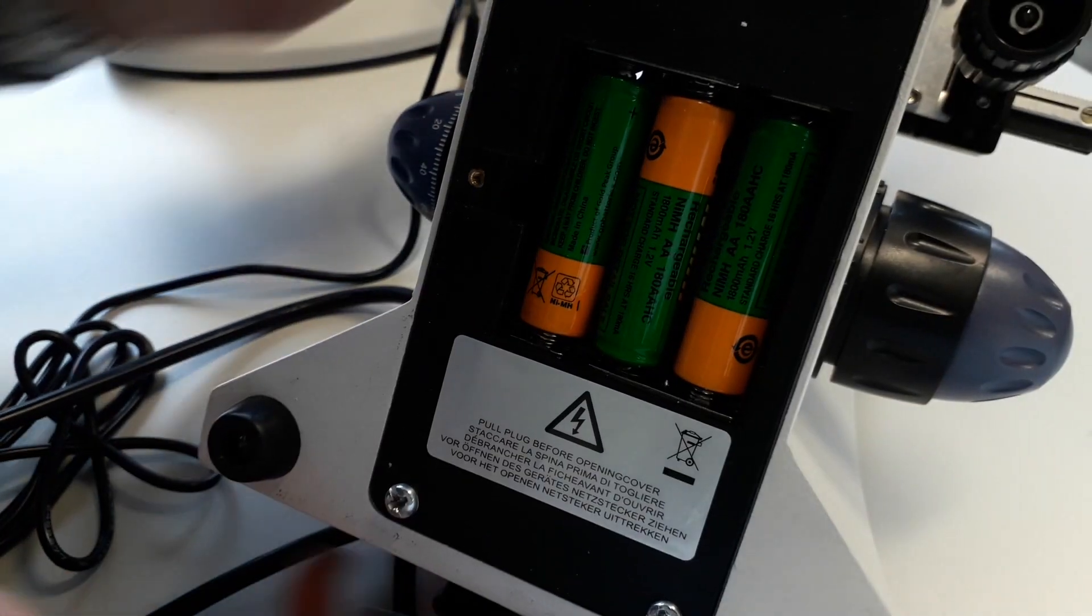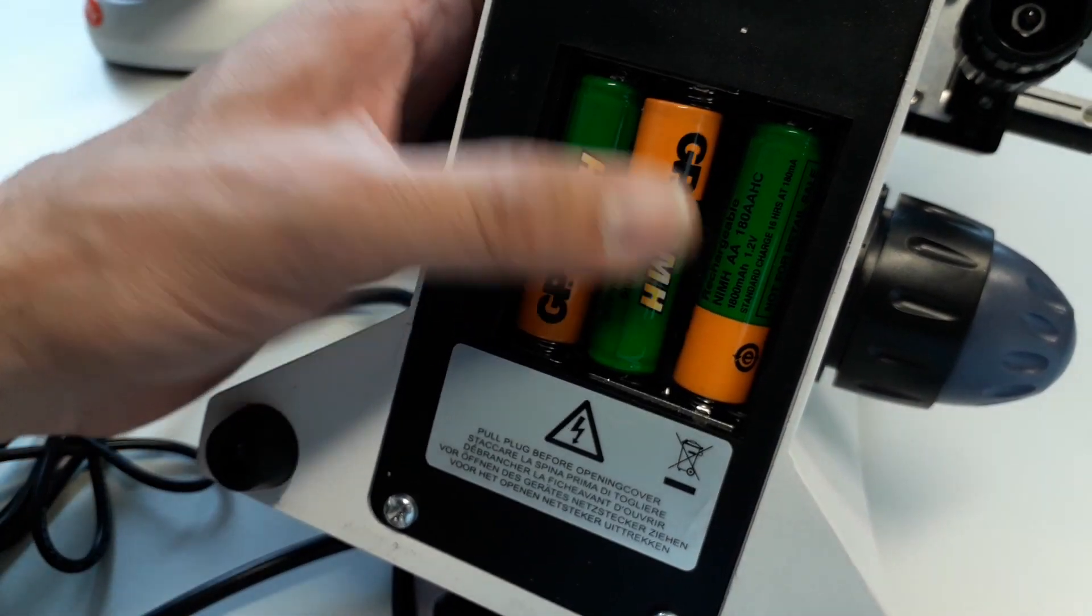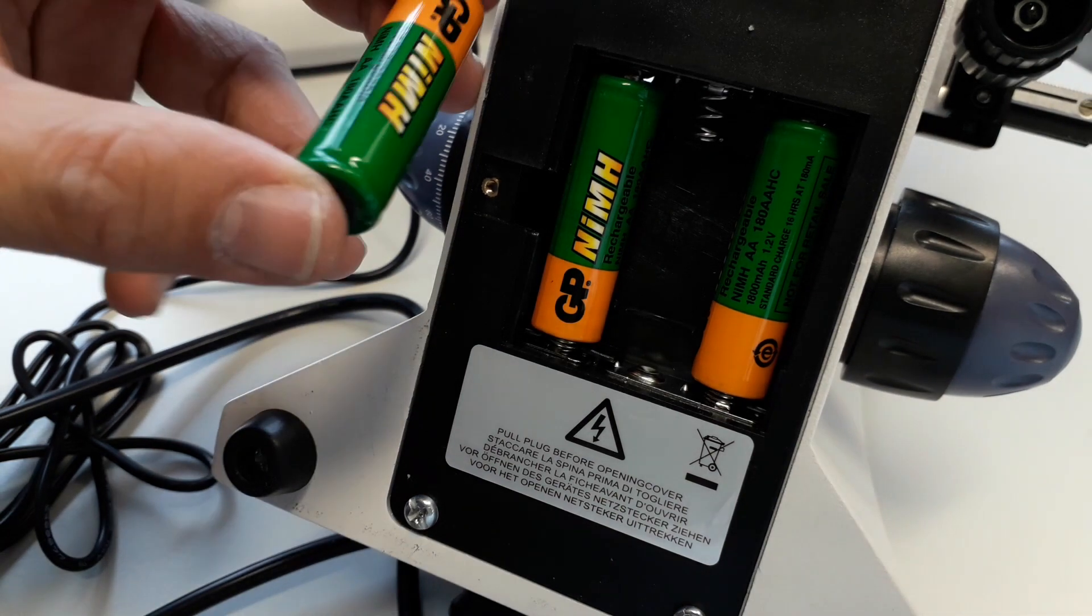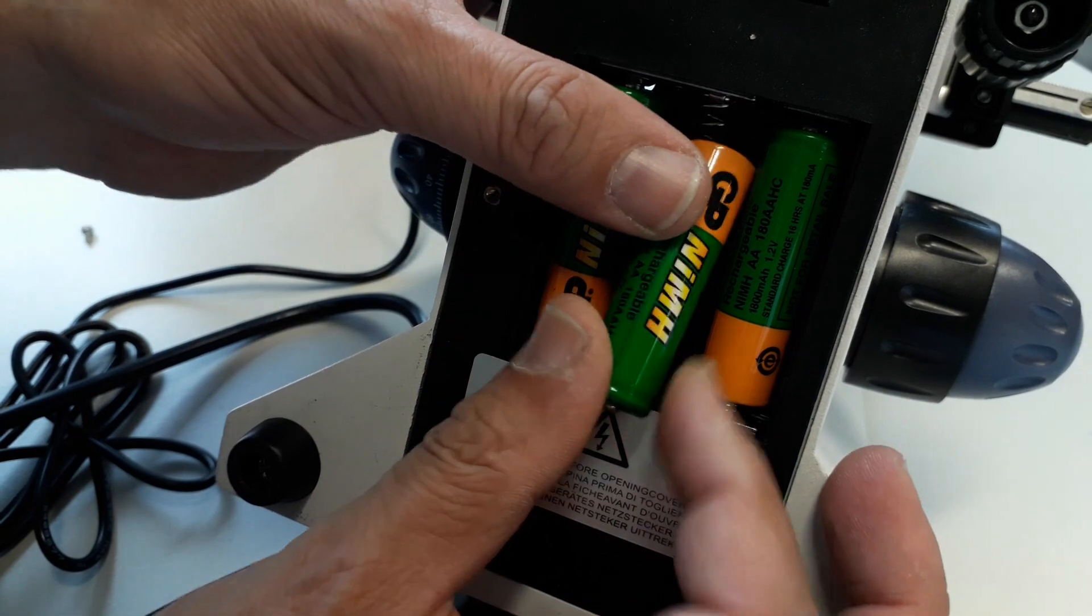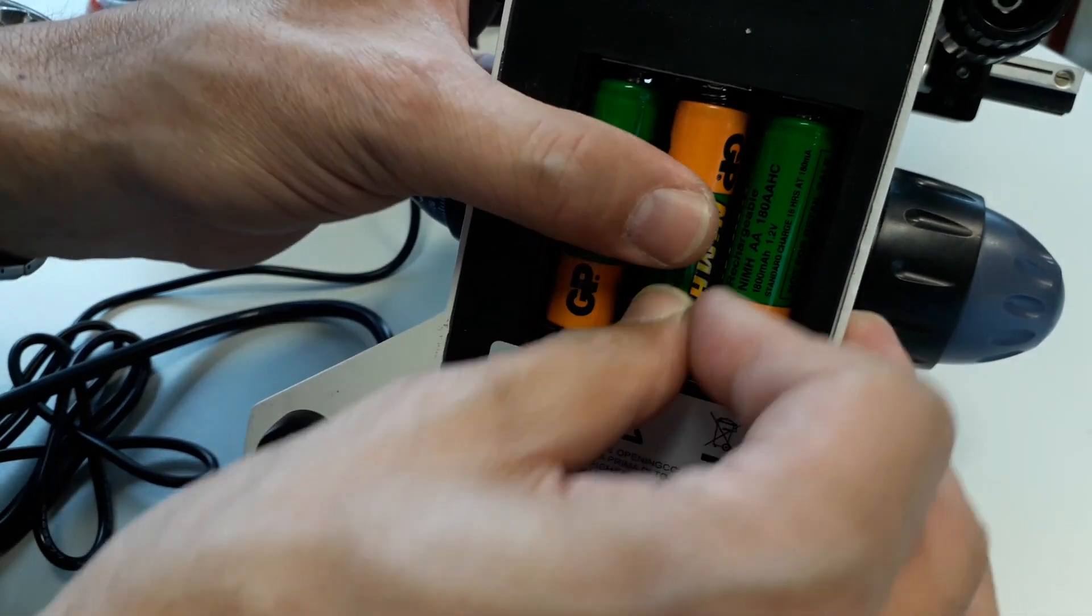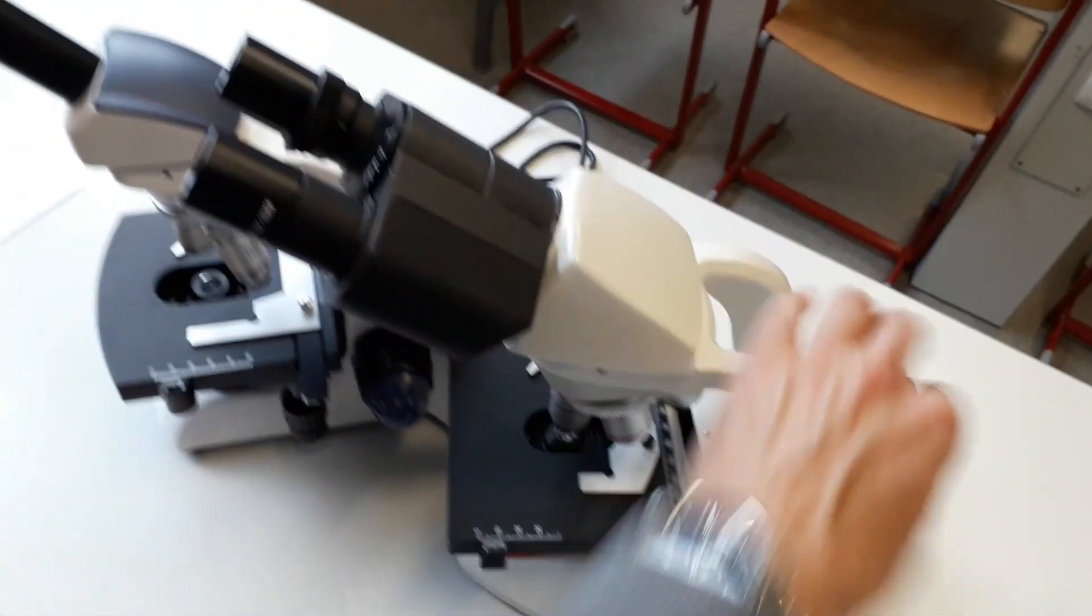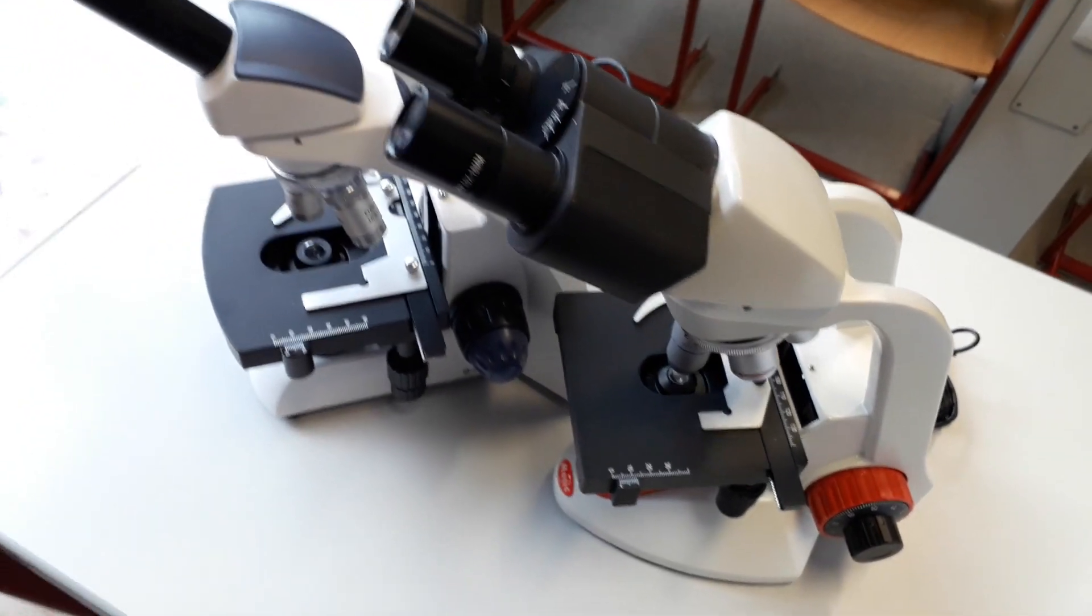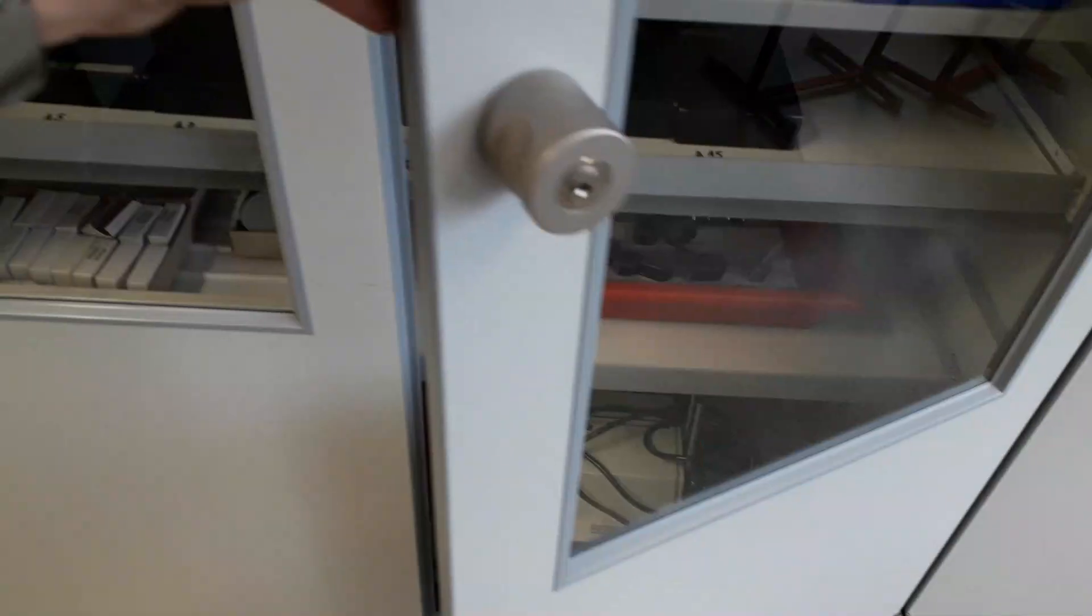So that is, of course, also a possibility that we have. If there is no power supply available, you can use batteries. Not something that we absolutely need or require, but at least it's a possibility. Now this one is, of course, a little bit more expensive because it has a binocular head. But ultimately, I think they're pretty much the same. Let's have a look at a few specimen slides.